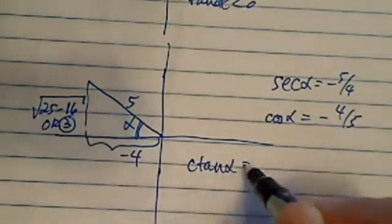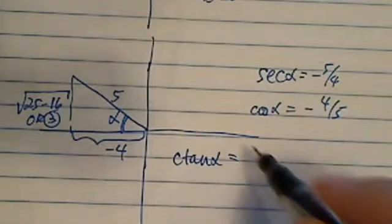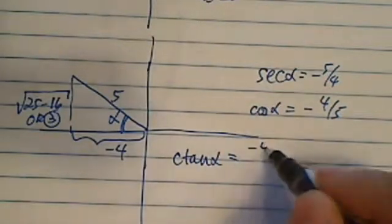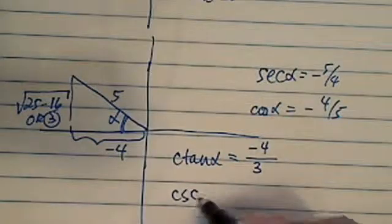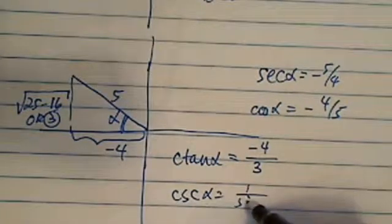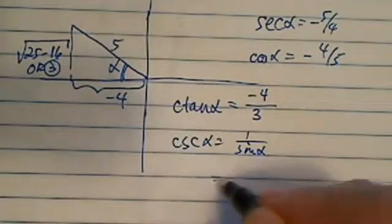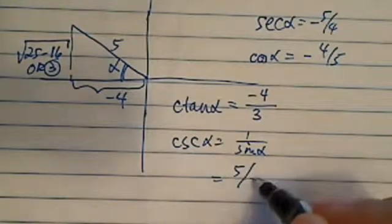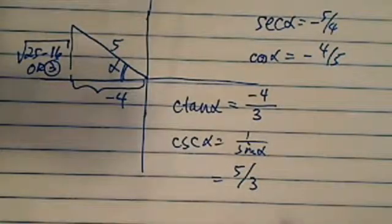Cotangent of alpha equals minus 4 divided by 3. And cosecant alpha is 1 over sine alpha, so it equals 5 over 3. All right?